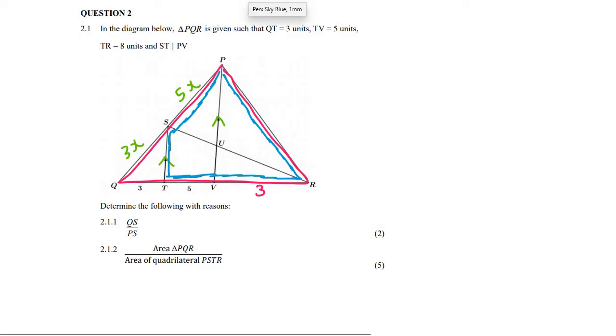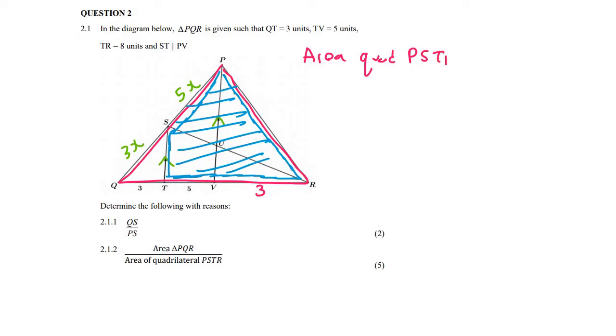So the better approach is actually to do the following. It's to realize that the area of this blue quadrilateral is the big triangle minus the small triangle. Can you see that? It's the big triangle minus this smaller triangle. So let's go work that out first. So the area of quadrilateral PSTR is equal to the area of triangle PQR minus the small triangle QST.